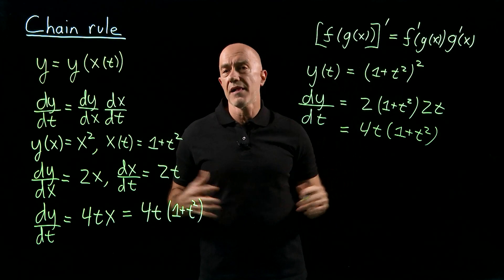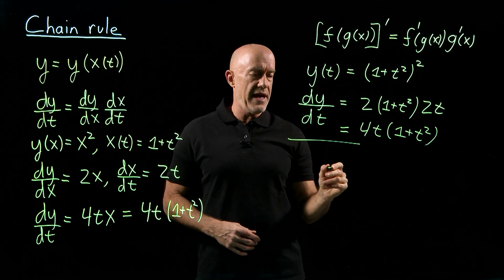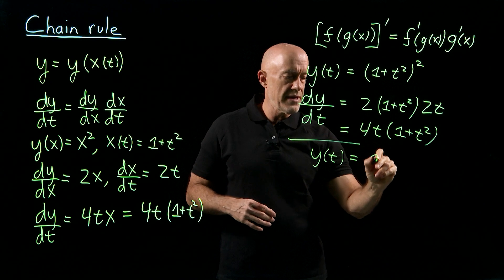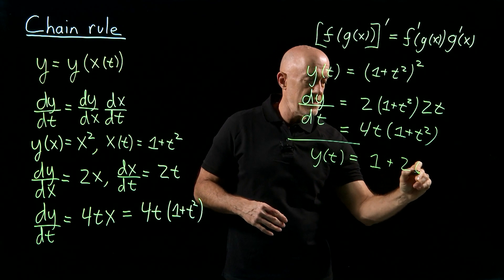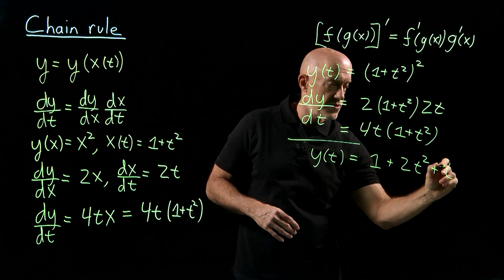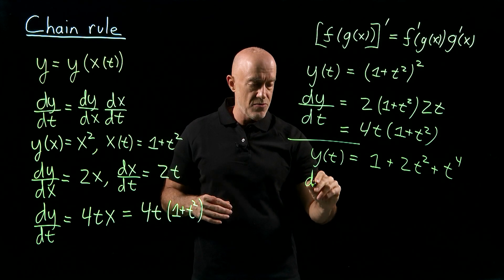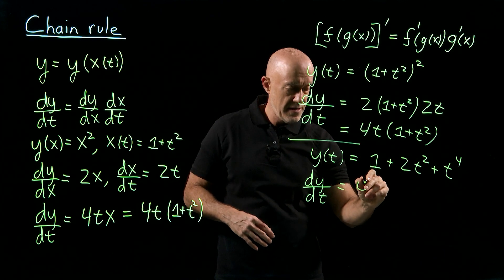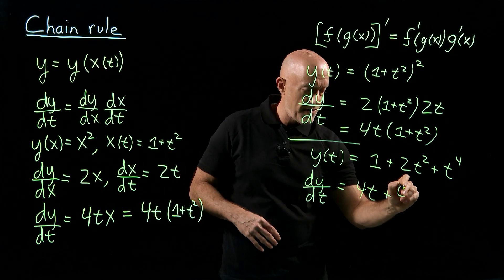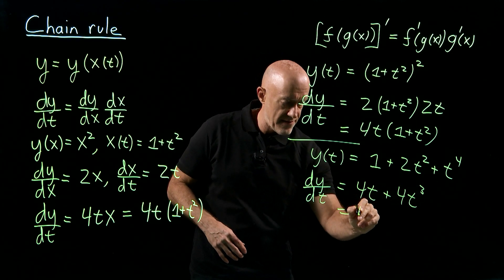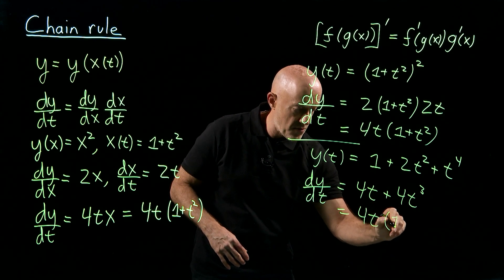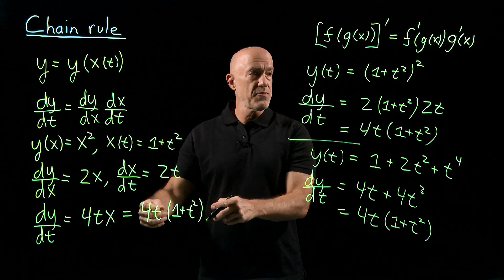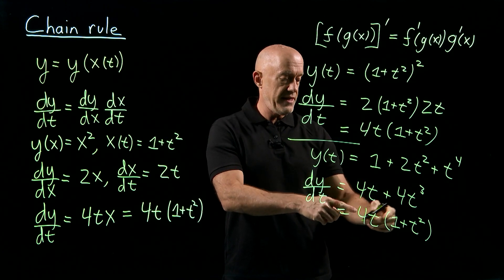For a polynomial, we can always just expand it and verify. Expanding 1 plus t squared, all squared, we get 1 plus 2t squared plus t to the fourth. Taking the derivative: the derivative of 1 is 0, the derivative of 2t squared is 4t, and the derivative of t to the fourth is 4t cubed. We can factor out a common 4t, giving us 4t times 1 plus t squared — the same answer, confirming all three methods agree.